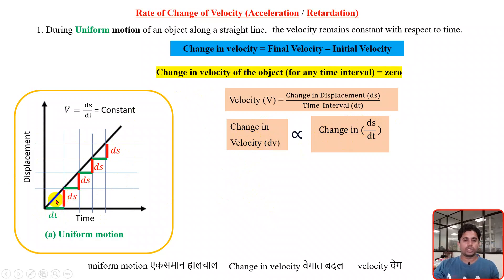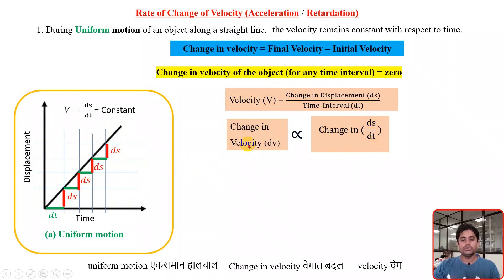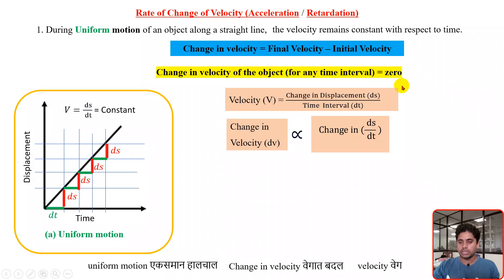So I can say for the uniform motion of the object, the change in velocity for any time interval — whether interval 1, 2, 3, or 4 — there is no change in velocity, because the velocity remains constant and there is no change in the ratio ds/dt. As there is no change in ds/dt, obviously there won't be any change in velocity, and as velocity is constant, the change in velocity will be zero. For the uniform motion case, change in velocity of an object for any time interval is zero.